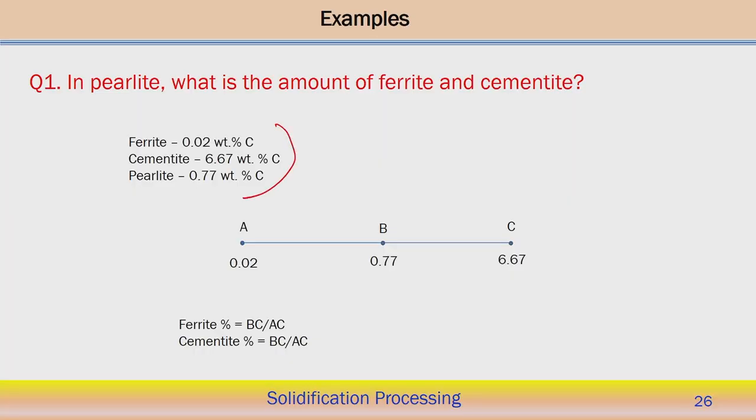The first example is to understand the amount of ferrite and cementite in pearlite, assuming that pearlite is a phase mixture of ferrite and cementite. We know the carbon percentage of pearlite, the carbon percentage in ferrite and cementite, assuming it is a binary phase system. Based on that, we can estimate the relative percentage of ferrite and cementite in pearlite.